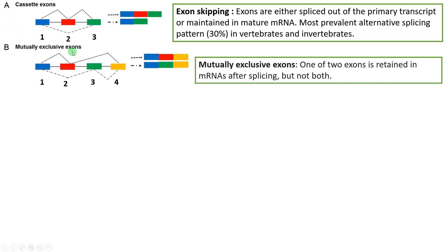The second type is called mutually exclusive exons. Here we have four exons: 1, 2, 3, and 4. One of two internal exons is retained — either exon 2 or exon 3 — but not both. So the resulting mRNA is either exons 1, 2, and 4, or exons 1, 3, and 4. Either the second exon or the third exon is skipped, which is why this is called mutually exclusive exons splicing.